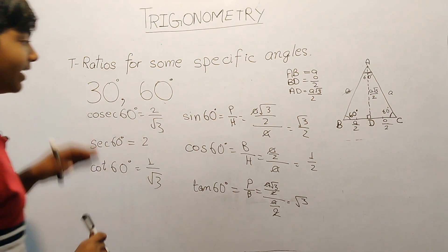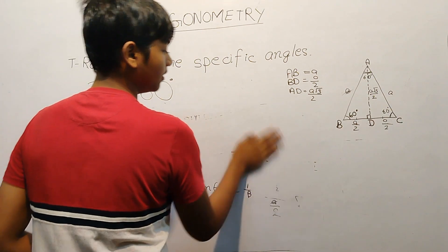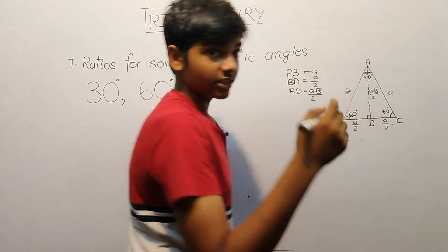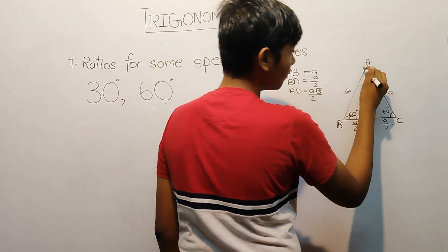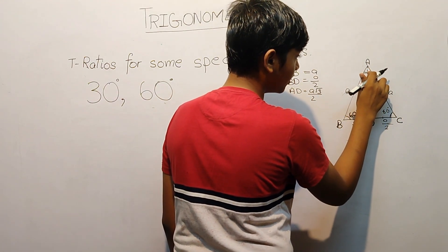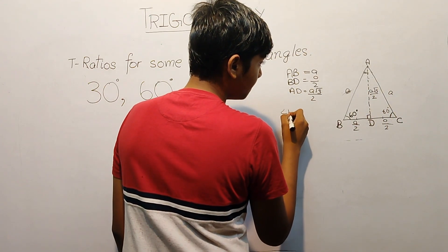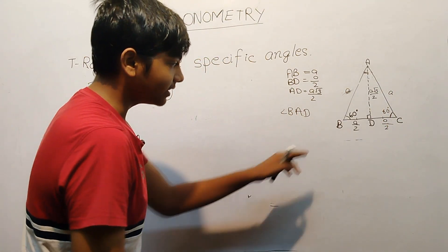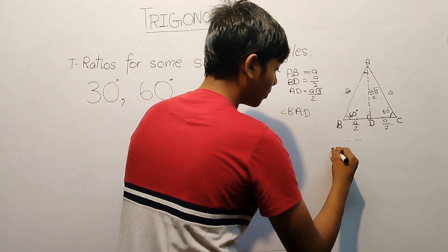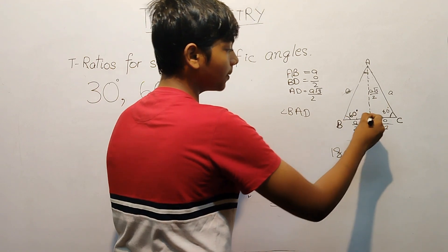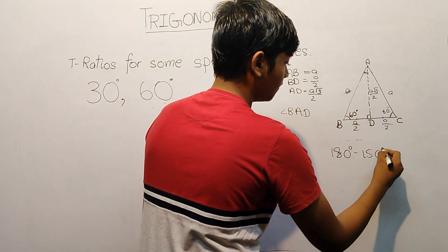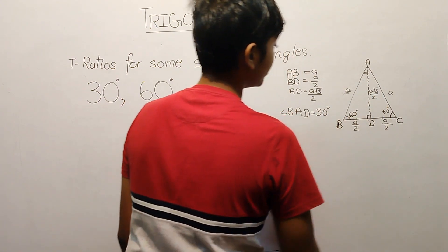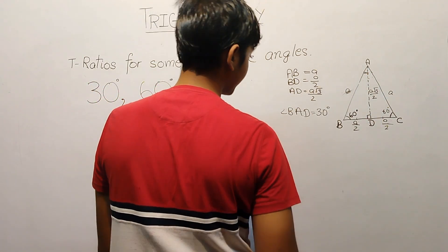Now we will look at 30 degrees next. For 30 degrees, we consider angle BAD. This entire angle at A was 60 degrees, but we are looking at just angle BAD. Since angle ADB is 90 degrees and angle ABD is 60 degrees, by angle sum property: 180 minus 60 plus 90 equals 30 degrees. Hence, angle BAD is 30 degrees.